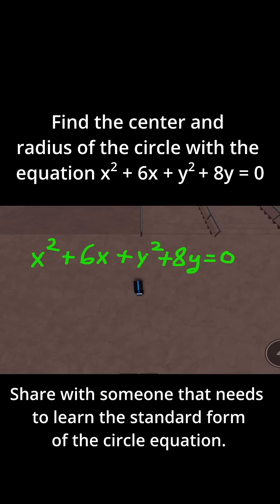This problem says, find the center and radius of the circle with the equation x squared plus 6x plus y squared plus 8y is equal to 0. So we can't find the center and radius just yet because we need to get the equation into this form. So we need to get into x minus h squared plus y minus k squared is equal to r squared form to get the center and the radius. So how can we put this equation into that form?